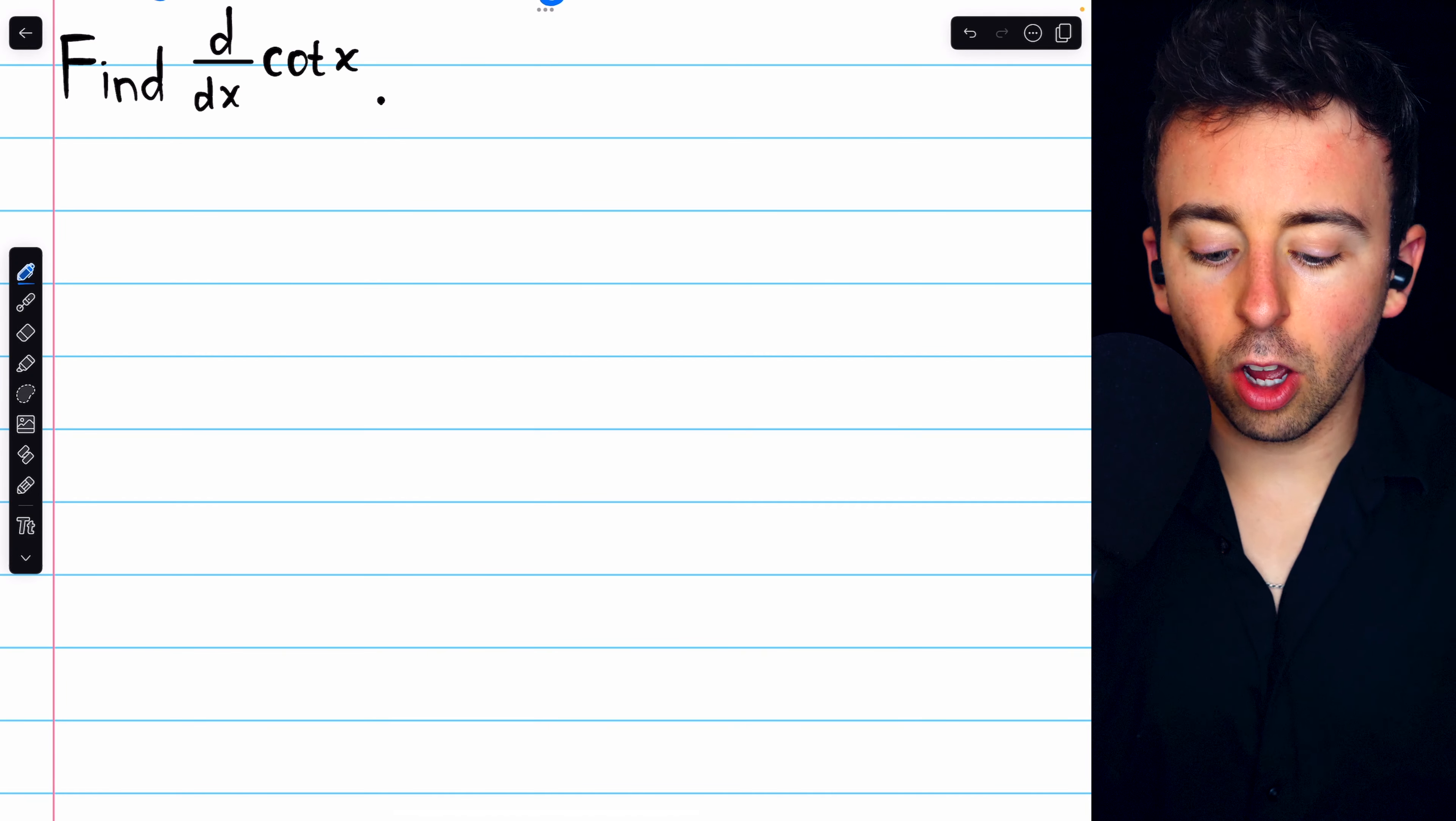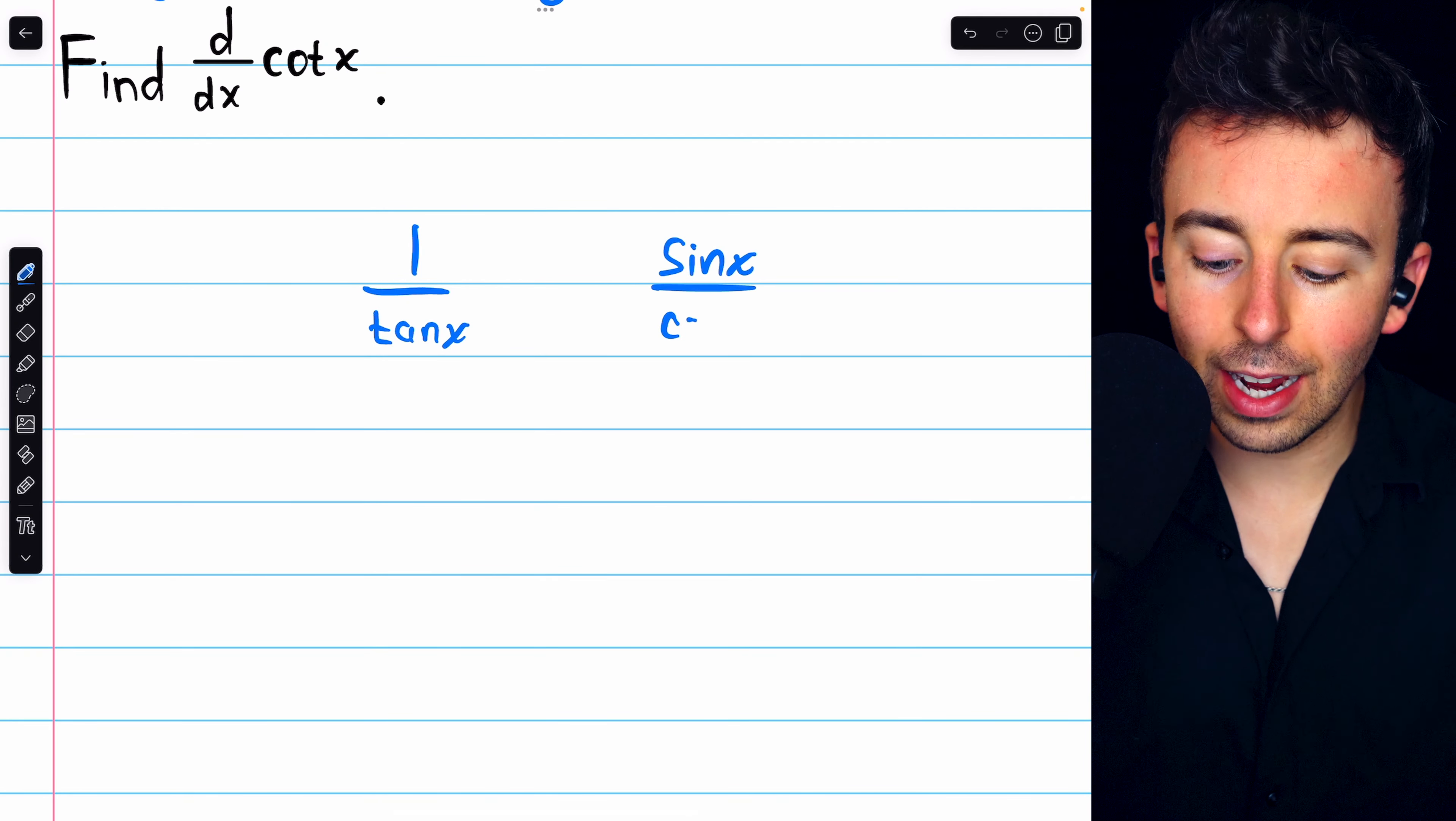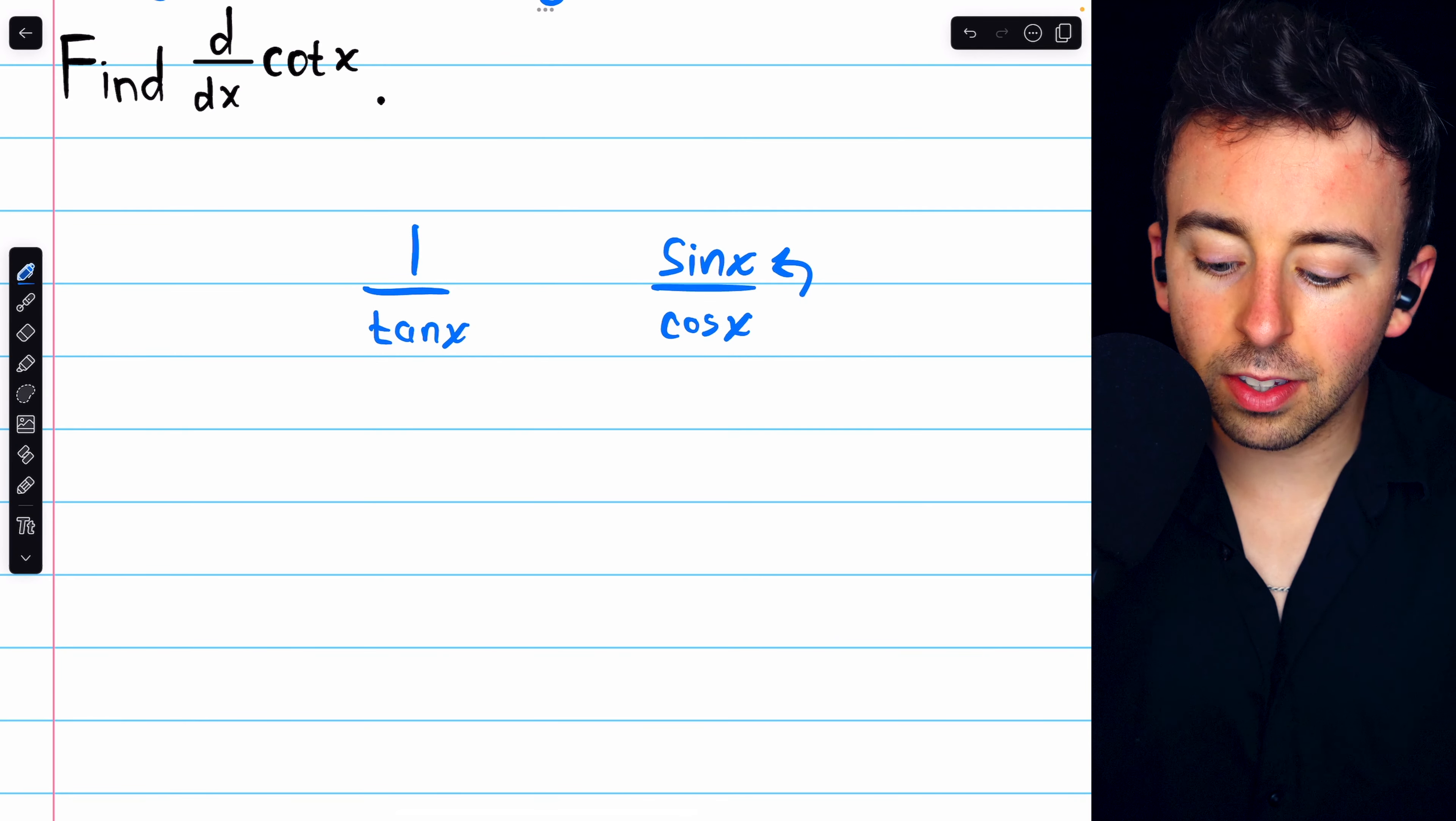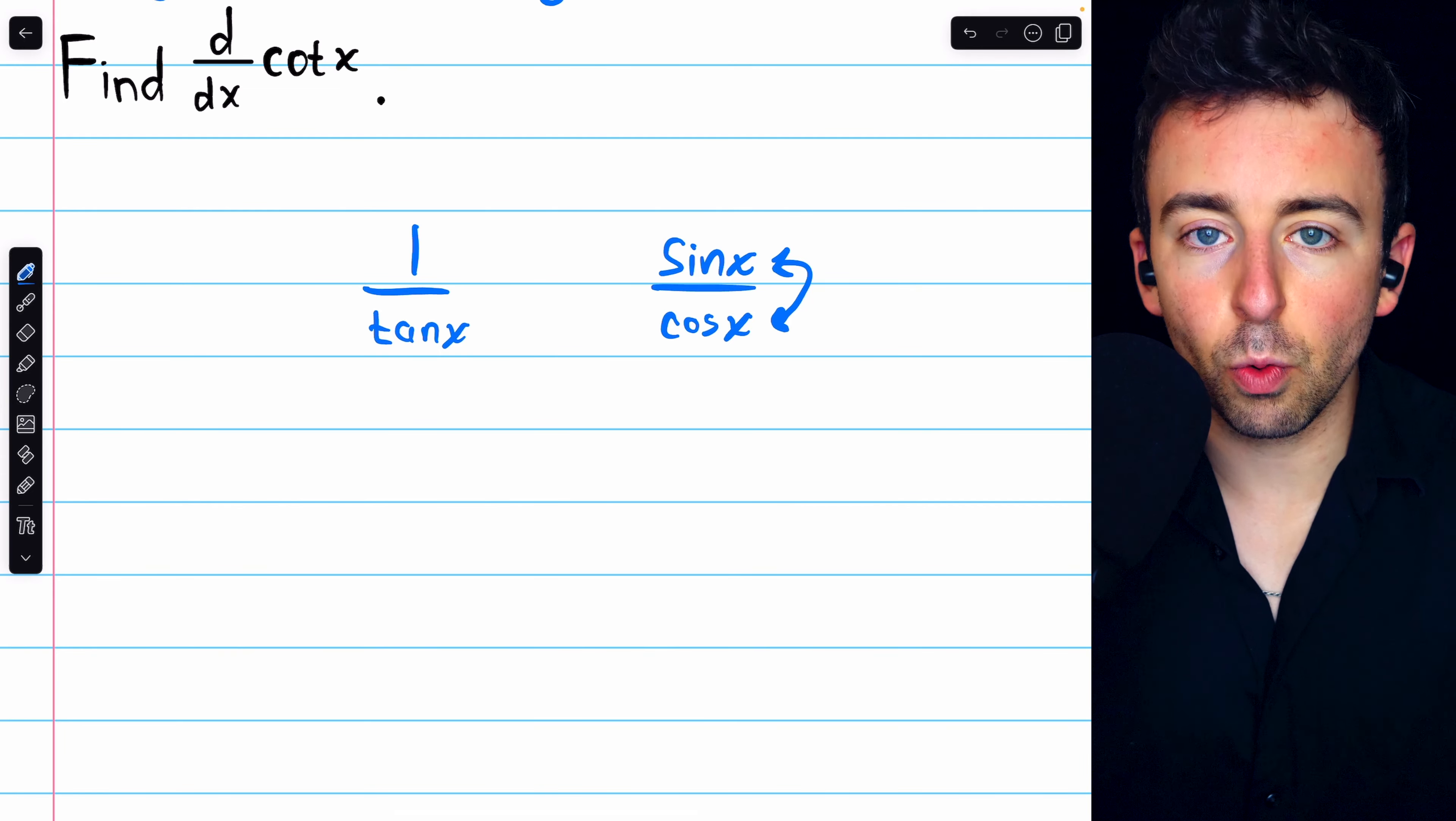You have to recall that cotangent is the reciprocal of tangent, and that tangent is sine over cosine. This means that cotangent is the reciprocal of sine over cosine. That means it's cosine divided by sine. So we'll apply the quotient rule to find the derivative.